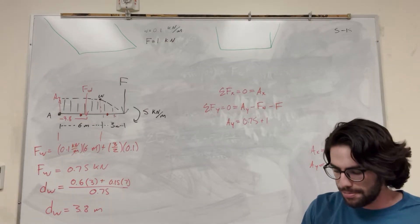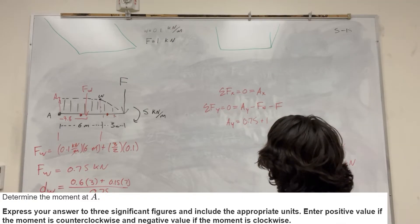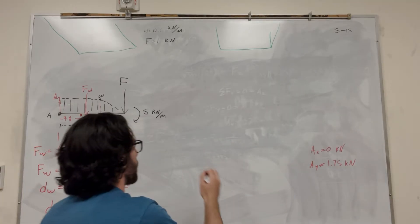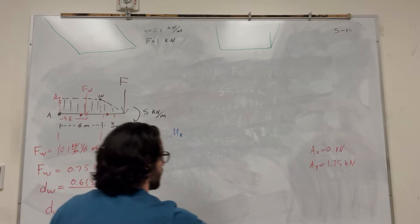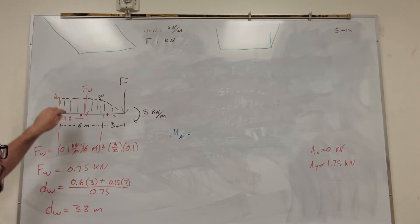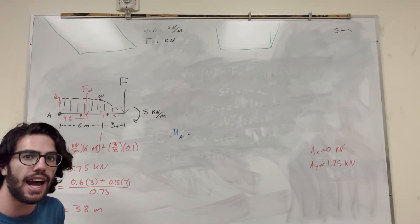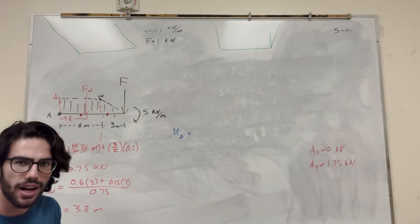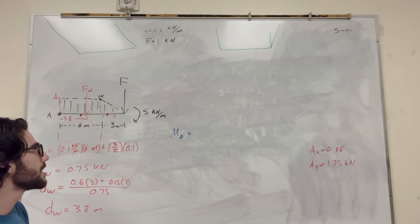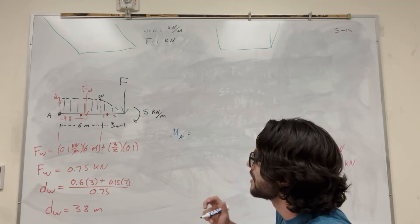That's part A. For part B, let's find the moment around A — this is where the 3.8-meter distance comes in. Moments are force in the y direction multiplied by its distance in the x direction, plus force in the x direction times distance in the y direction. Since there are no forces in the x direction and no y-direction distances, we just find the y forces and multiply by their x distances.